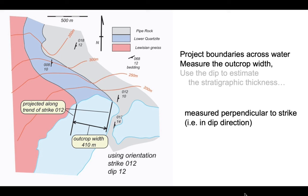Now we can measure the outcrop width on this datum represented by the water level of the lake, and this value of outcrop width is measured perpendicular to the strike, i.e. in the dip direction. So if we do this on this particular example, the outcrop width we can measure off to be 410 meters.